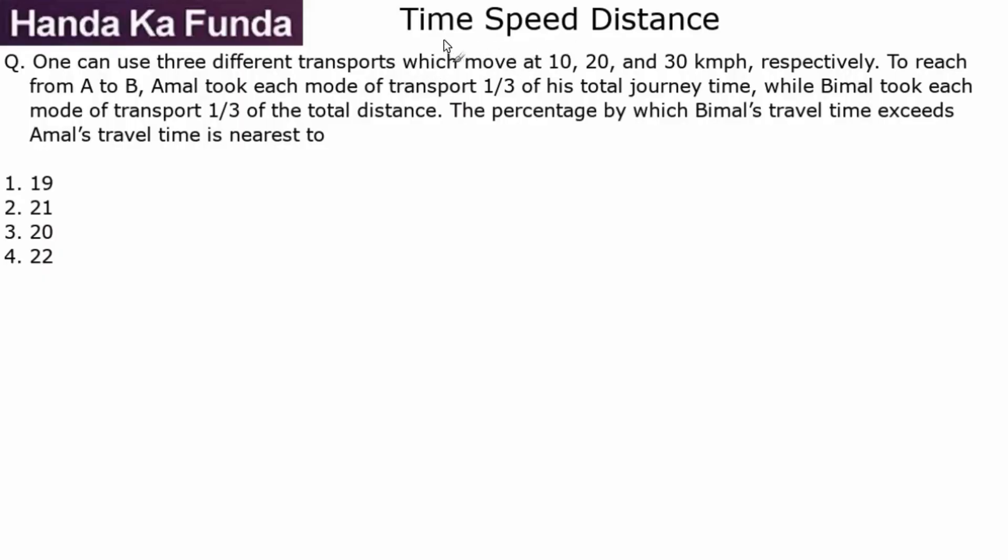Hi everyone, welcome to another question on time, speed, and distance. One can use three different transports which move at 10, 20, and 30 kilometers per hour respectively to reach from A to B. Amal took three modes of transport for one-third of his total journey time. That means for Amal, the time taken for each part of the journey was constant.